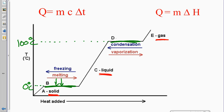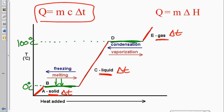If we are in a phase, we can change temperature — we can warm up or cool down. So as long as we're in a phase, we're using Q equals MC delta T. In order to quantify how much energy it takes to do a phase change, there is no delta T in a phase change. So we have to use Q equals M delta H.